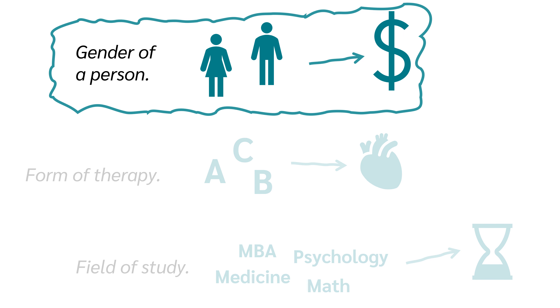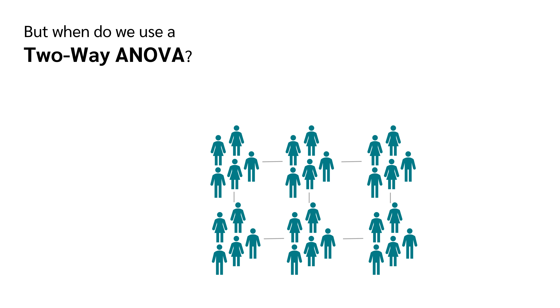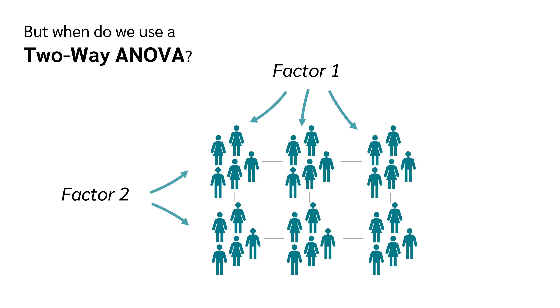In the first case, we have a variable with only two categories, so of course we would use the independent samples t-test. When do we use a two-way ANOVA? We use a two-factor analysis of variance when we have a second factor and we want to know whether this factor also has an effect on the dependent variable.